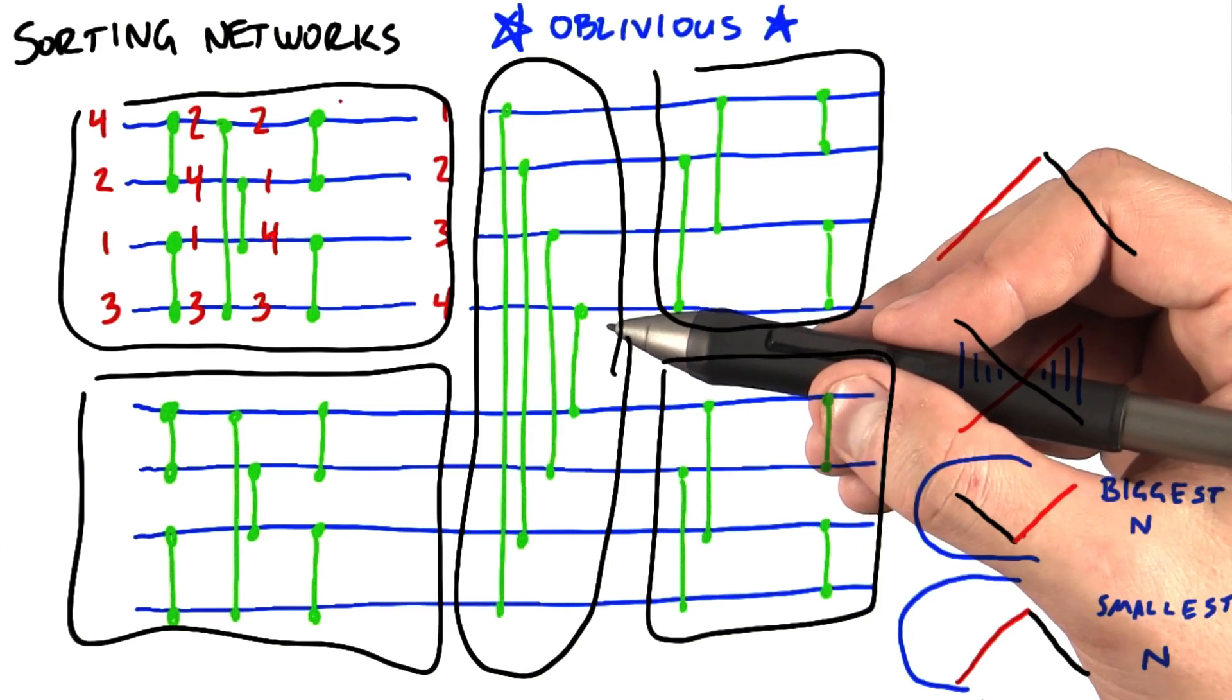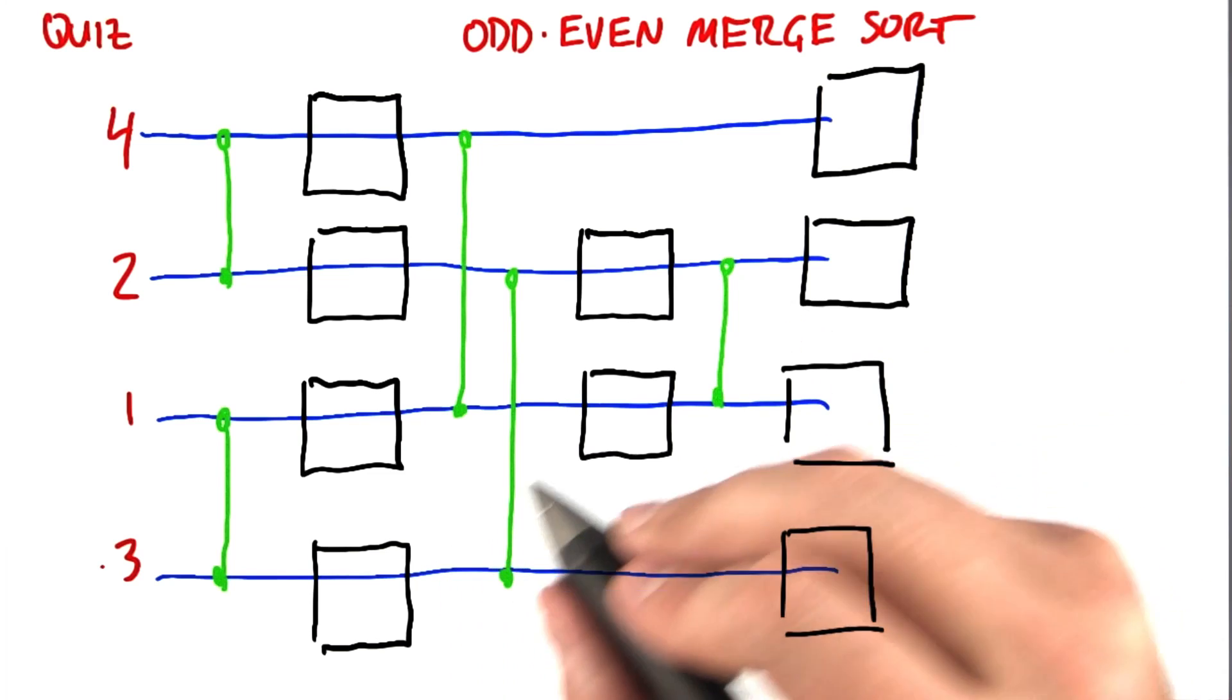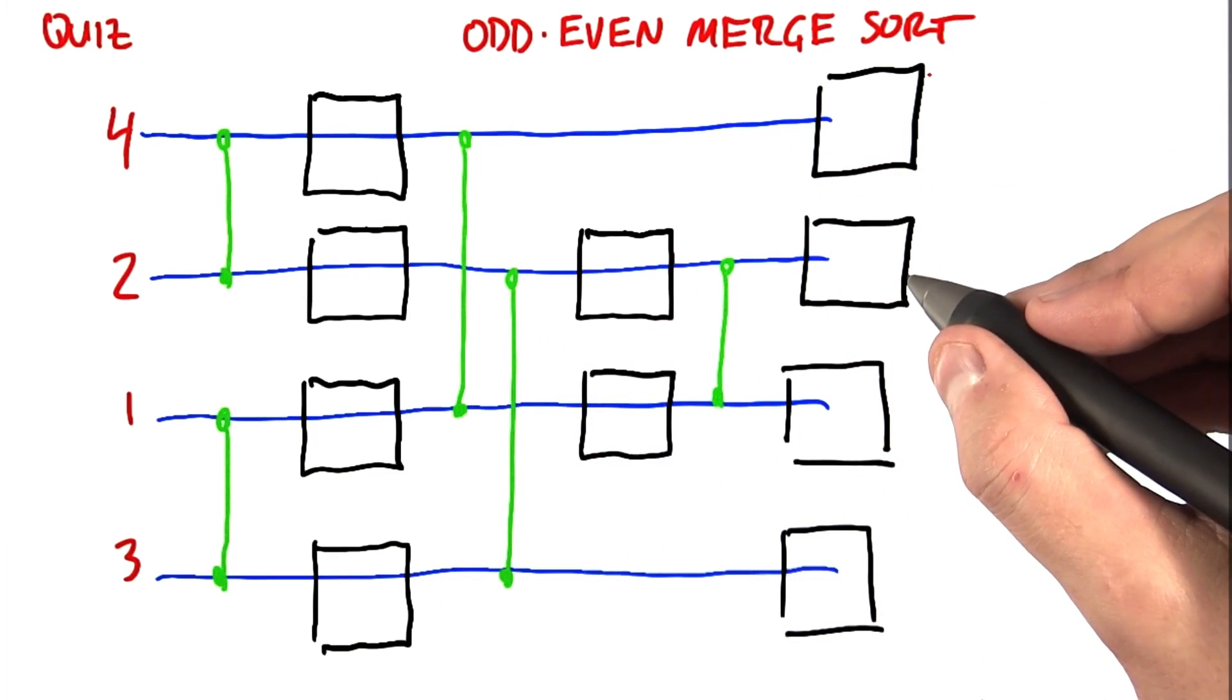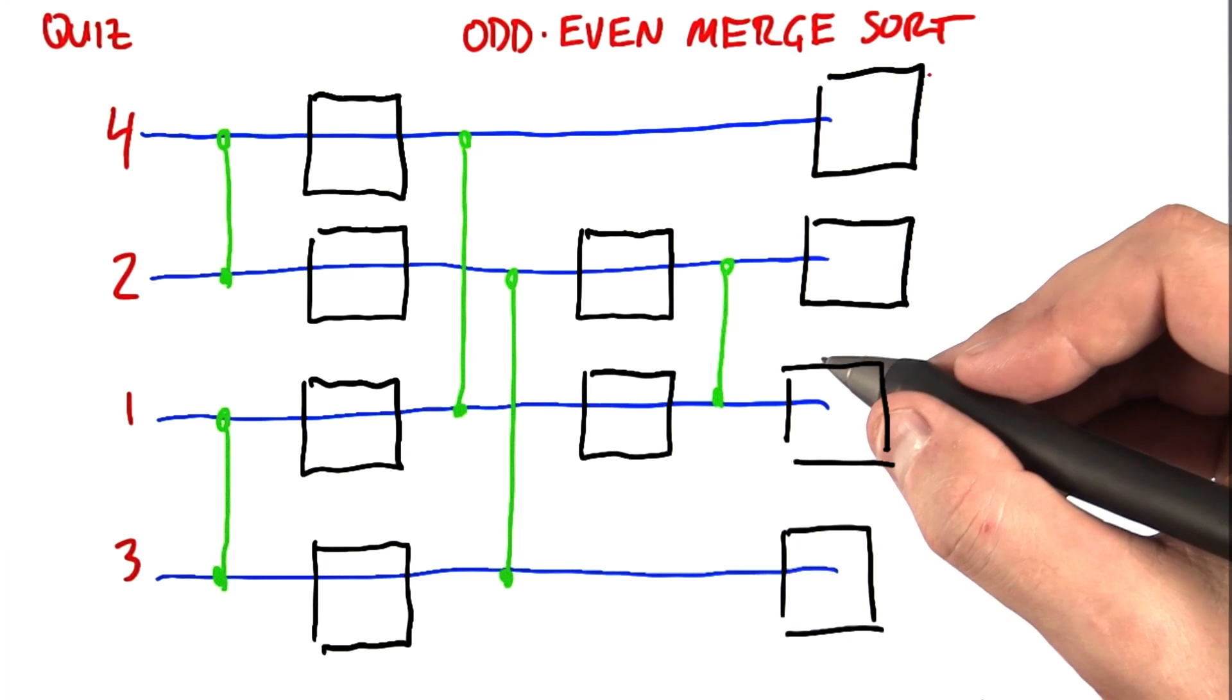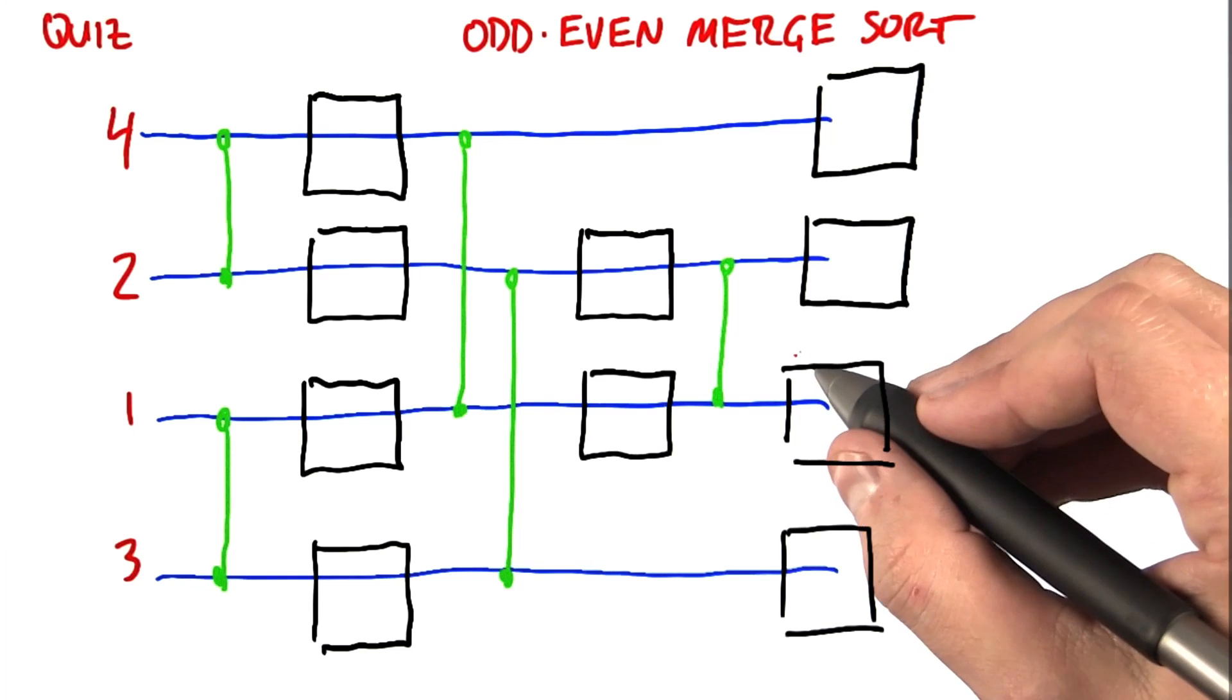And it helps that a bitonic sort is probably the simplest sort to actually implement. Two, bitonic sort is not the only kind of sorting network. The odd-even merge sort is a different kind of sorting network that generally runs a little faster, but it's a little more complicated to explain or program. But the basic ideas are the same.